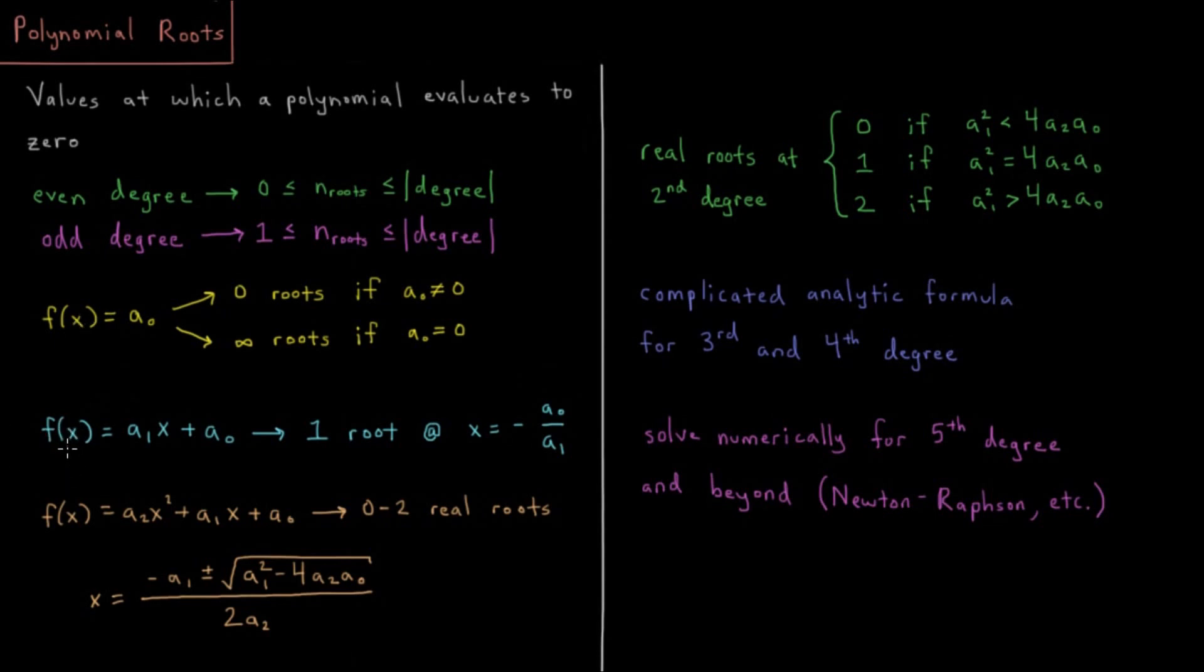Moving on to linear functions: f(x) equals a coefficient a₁ times x plus a constant a₀. So in this case, that's a degree of 1, so it's between 1 and 1, so it can only be 1.